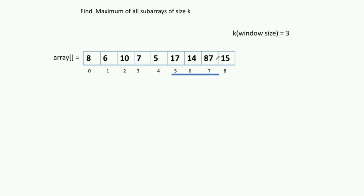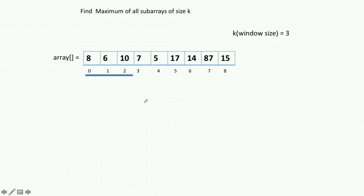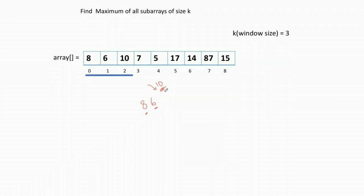There is one trick in this problem: whenever we are processing a new number in our subarray and that number is more than a number already stored, the stored number is no longer useful. Those stored numbers can never be the maximum element for any further window. For example, in the first subarray with 8, 6, and then 10 — since 10 is more than 8 and 6, they can never be a maximum value in any further subarray. We use this logic to solve the problem efficiently using the DQ (deque) data structure.